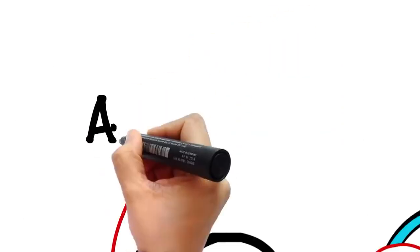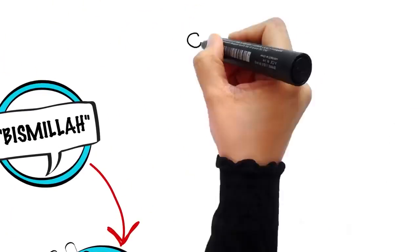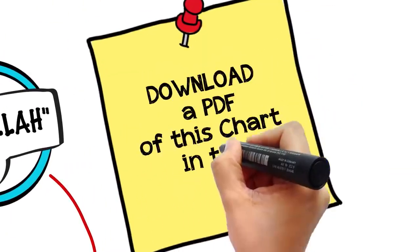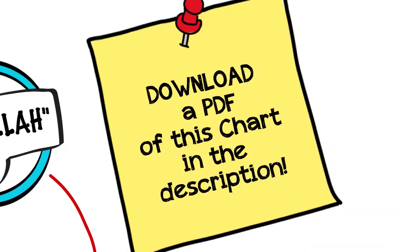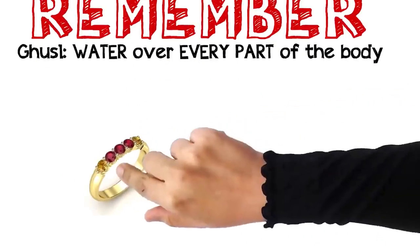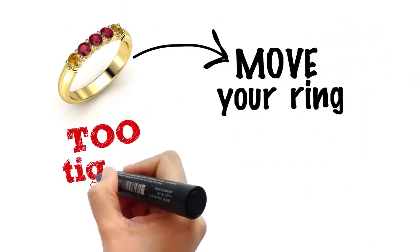So these are the etiquettes of the complete ghusl. Ghusl essentially means letting water run over every part of your body. So if you are wearing a ring, you should move it. And if it is so tight that the water won't reach the skin underneath, then you have to remove it.